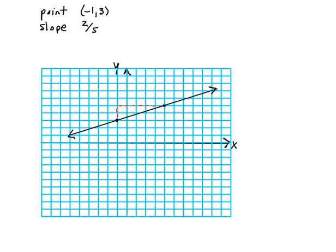Okay. Now, to find the equation of this line, I'm going to go ahead and use the point slope form. Y minus Y1 is equal to M times X minus X1. And in this case, my X1, Y1 is my point, negative 1, 3, and my slope is 2 fifths.